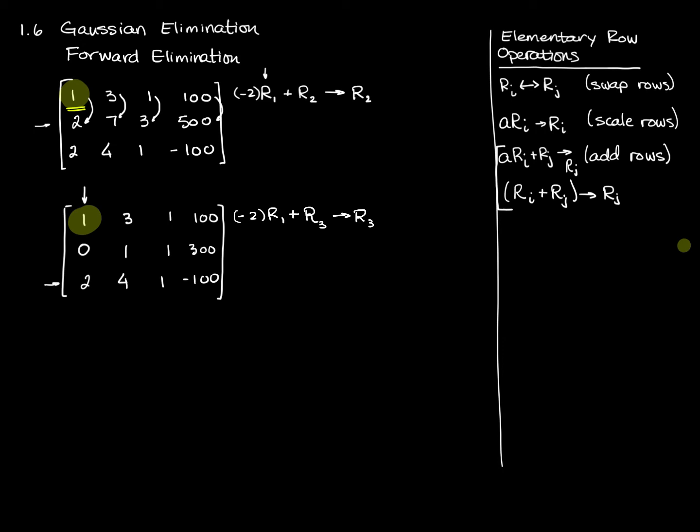So negative two times position one is negative two. Negative two times, oh, I didn't give myself anywhere to put that. My first row is like this. I've changed my second row now so that it is now 0, 1, 1, 300. And I'm in the process now of changing my third row. So I'll start over. Negative two times position one is negative two. You add that to positive two and you get zero. Negative two times position two is negative six. Negative six plus four is negative two. And negative two times one is negative two. Negative two plus one is negative one. Negative two times 100 is negative 200. Negative 200 plus negative 100 is negative 300.